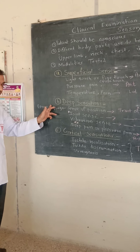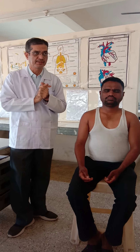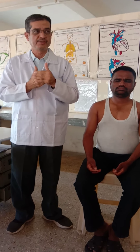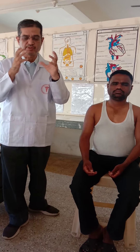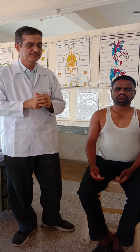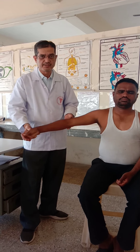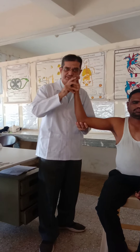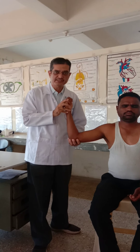Now we will start examination of deep sensations. The first examination is sense of position, also called proprioception. This sense of position and joint sense are carried by the tract of Goll and Burdach. I am going to move one upper limb of this subject in various directions, fix it in one position, and ask him to put the other extremity in that same position. His proprioception is good.